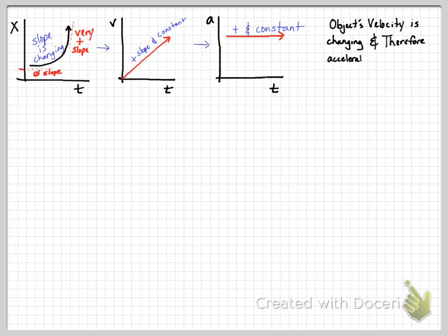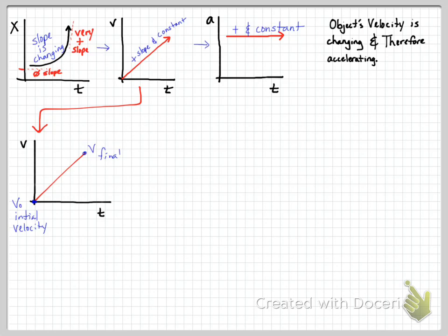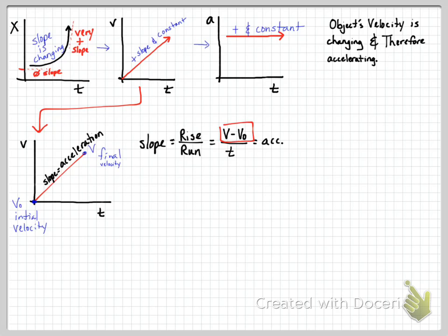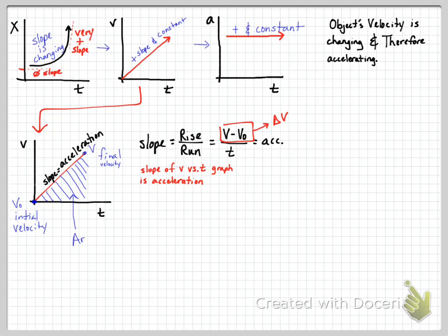The object's velocity is changing, and therefore it is accelerating. On the velocity versus time graph, initial velocity is V₀, final velocity is V, and the slope — rise over run — is V minus V₀ over time, which is acceleration. So slope equals acceleration. V minus V₀ is the change in velocity, and we rewrite the equation as acceleration equals change in velocity over time.